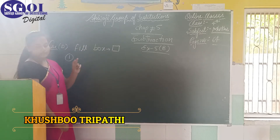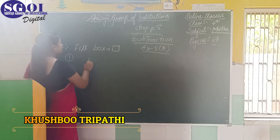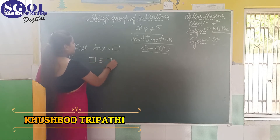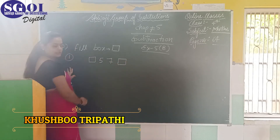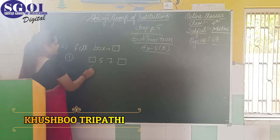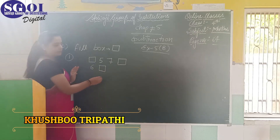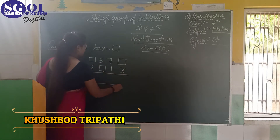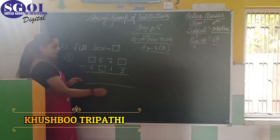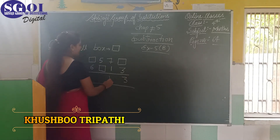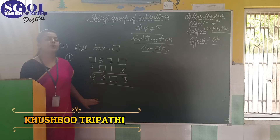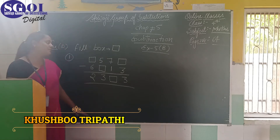Let's look at question number D. There is a box, then 5, then 7, then another box, then 6, box, 1, 3. There is a subtraction. The result is 3, box, 3, 2. So we need to fill the boxes using subtraction.